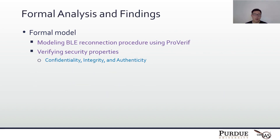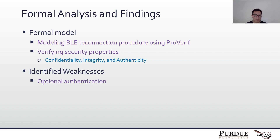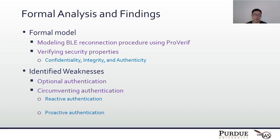We build our model and verify it using CryptoVerif. We verify three types of security properties: confidentiality, integrity, and authenticity. The details of our formal analysis can be found in our paper. Through our analysis, we identified two weaknesses. One is that in some cases, authentication is optional. The second is that in some other cases, authentication can be circumvented. There are two types of authentication procedures defined in the specification: reactive and proactive. Our analysis shows there's a design issue in the reactive authentication procedure, and therefore it can be bypassed. And if the proactive authentication implementation does not strictly follow the specification, it can also be bypassed.